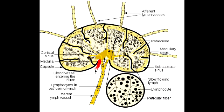You also see the medullary sinus, which contains the macrophages. There is the trabecula along with medullary cords, in which there are plasma cells. There is also the paracortex, which contains the T cells, and the follicle of the cortex, which contains the B cells.